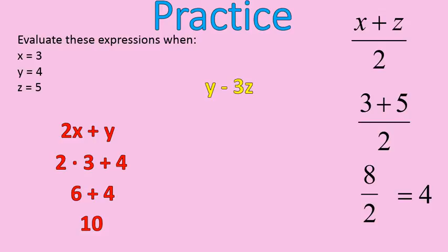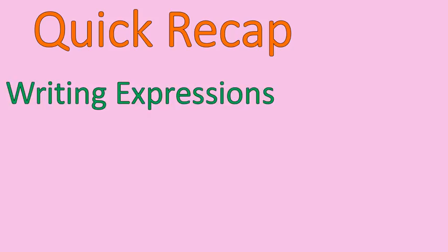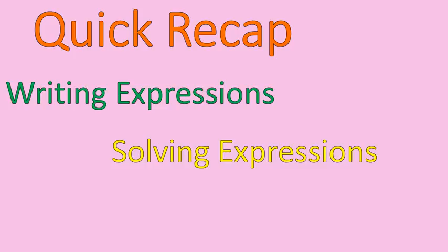For our final question, y minus 3z — the yellow expression — substitute y equals 4 and z equals 5. We do multiplication before subtraction, so 3 times 5 is 15, giving us 4 minus 15. Remembering the rules for adding and subtracting integers, a positive 4 minus 15 gives us negative 11. That's a quick recap: we did writing expressions from sentences, solving expressions, and lots of practice. I hope that was helpful — have a wonderful day.